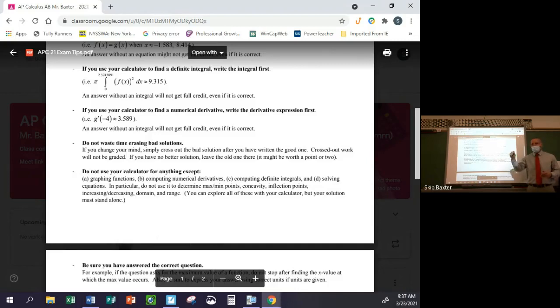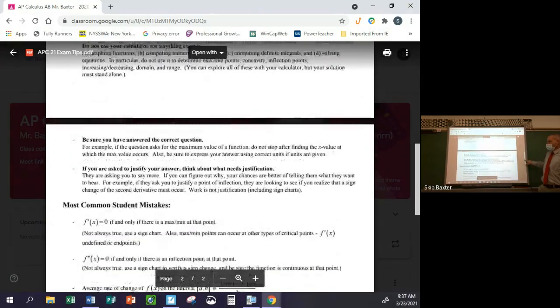but those are the only things you're allowed to actually show that you used it for. Don't say, my calculator said that the max occurs at... Boom. You won't get credit for that. And by the same token, if you just say the max is whatever, they're going to assume you used your calculator if you don't have any calculus work to show for it. So there are limits on your calculator.